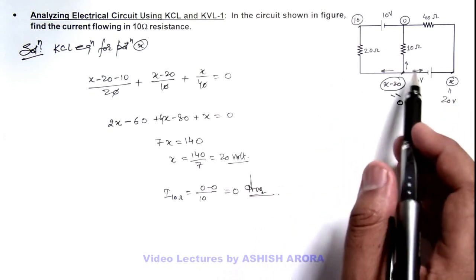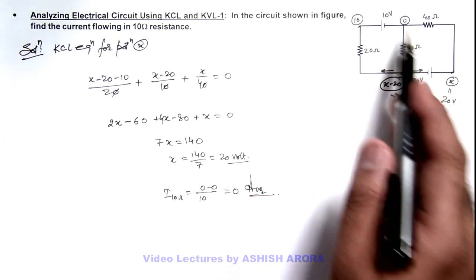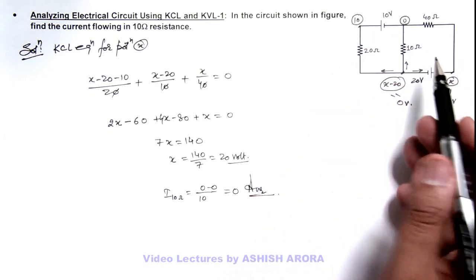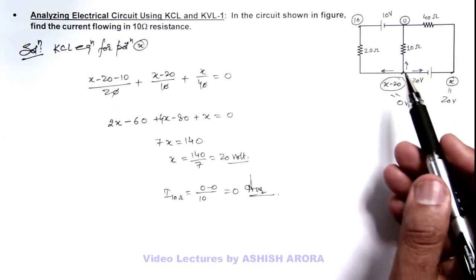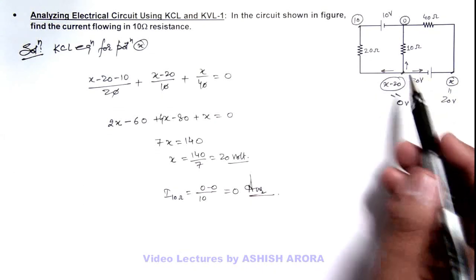And for Kirchhoff's voltage law, even if you take zero at other point and x at some other point, it won't make any difference because the final result does not depend on how you are distributing potential.